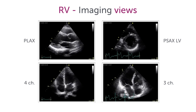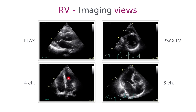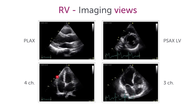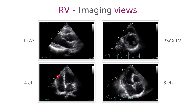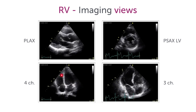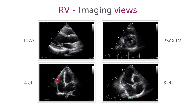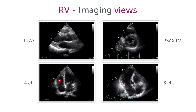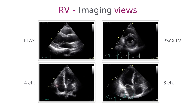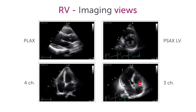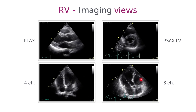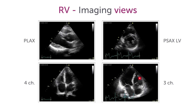The four-chamber view is probably the view we use most frequently. Here we can nicely assess both the radial and the longitudinal function. We also see a little bit of the right ventricle in an apical long axis view, similar to the parasternal long axis view. This view, however, is not really ideal.